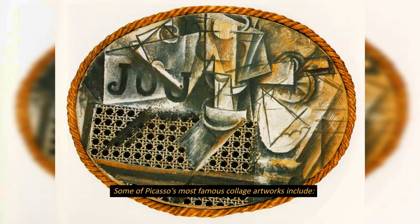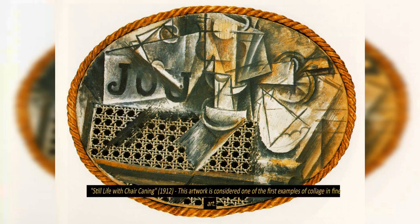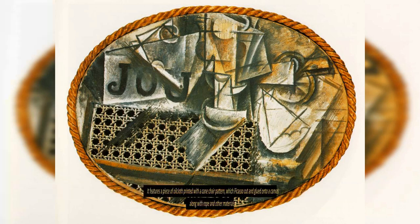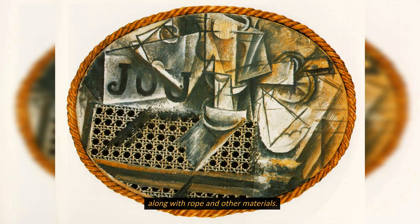Some of Picasso's most famous collage artworks include Still Life with Chair Caning, 1912. This artwork is considered one of the first examples of collage in fine art. It features a piece of oilcloth printed with a cane chair pattern, which Picasso cut and glued onto a canvas along with rope and other materials.